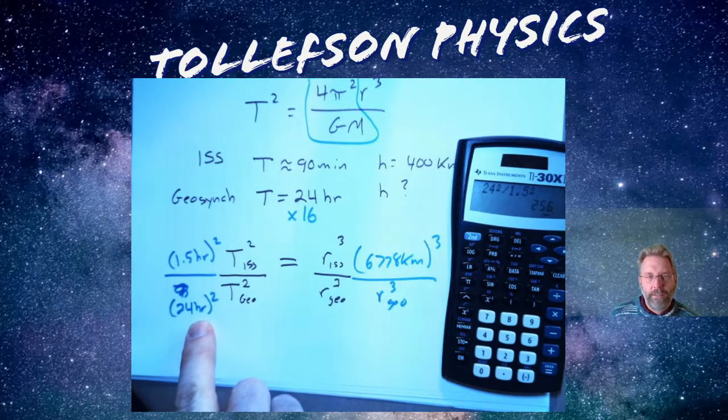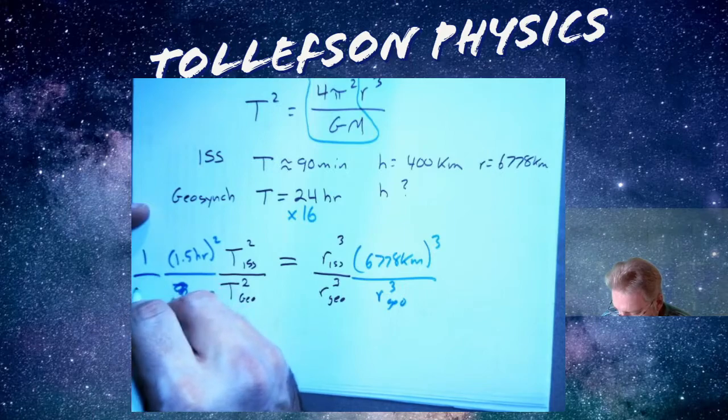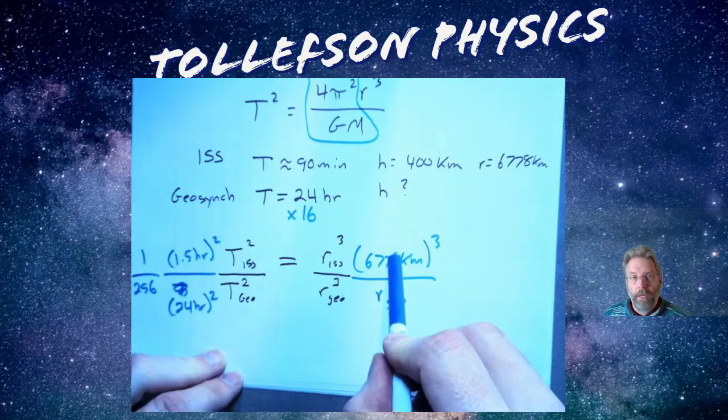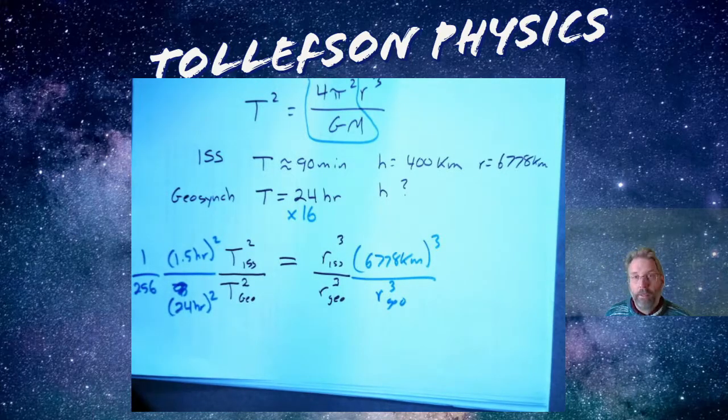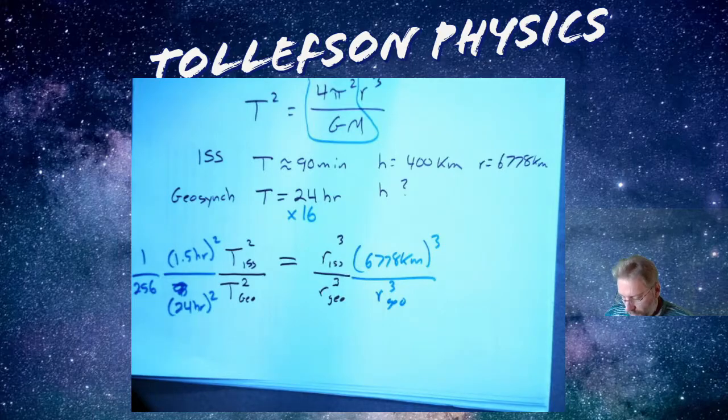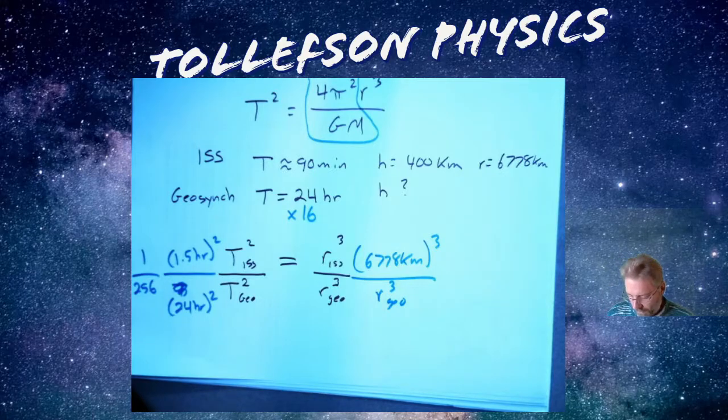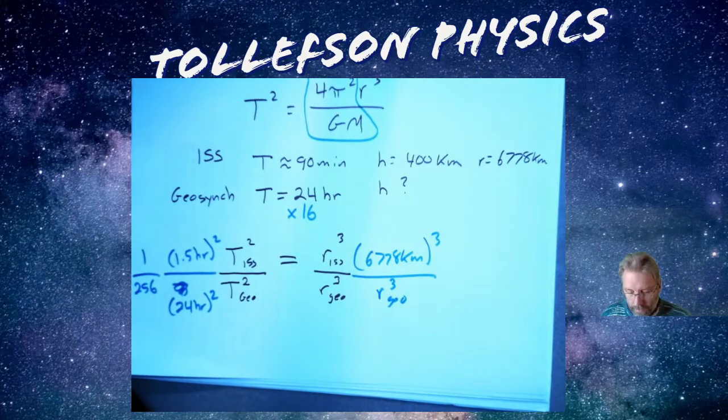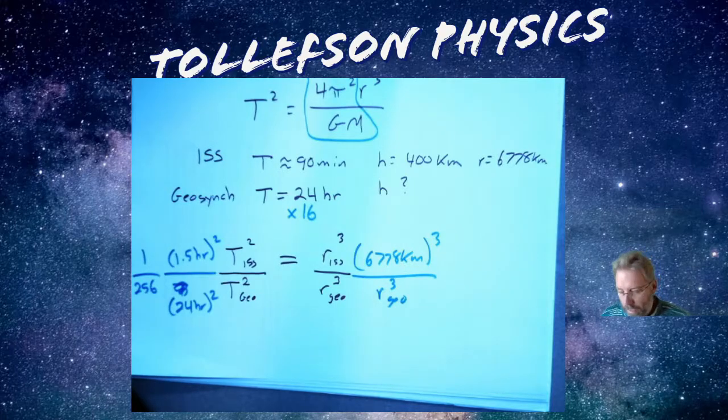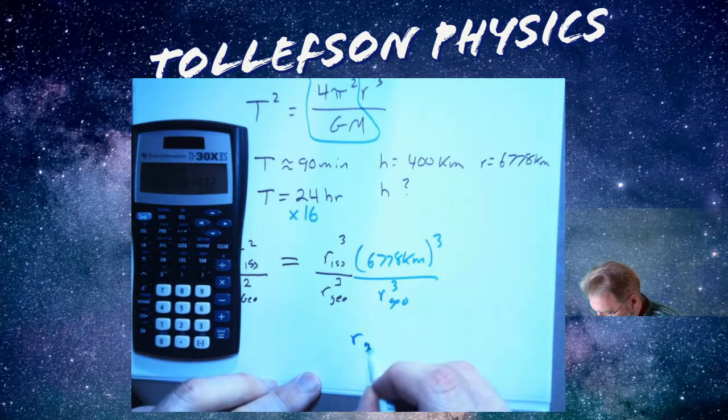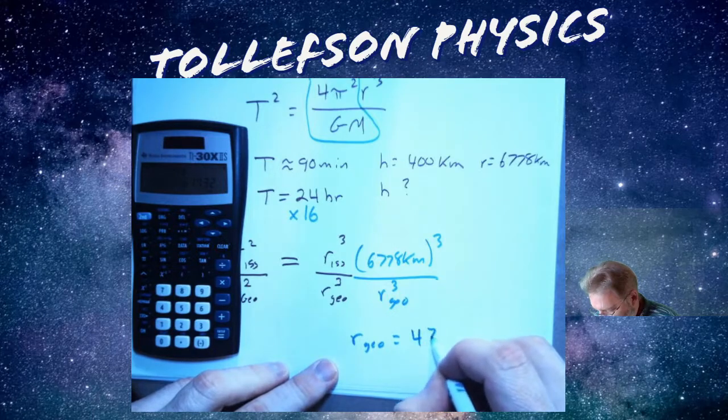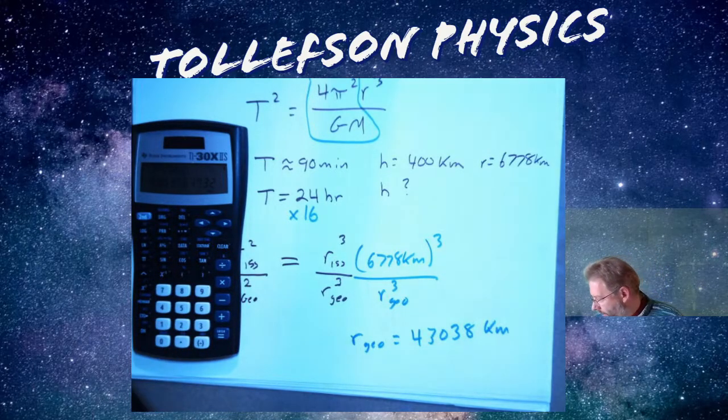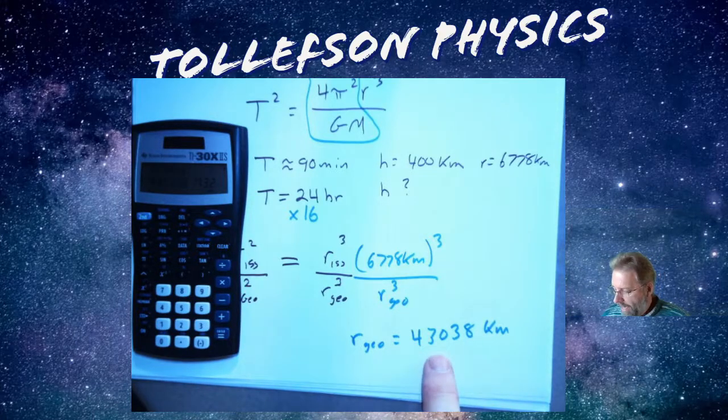So I'm going to take 6,778, and kilometers is fine in this case, cube it. And then I'm going to multiply it by 256 because that's what this fraction ends up being. And that will give me the value of this cubed. And now I'm going to hit cube root. And I get an r for the geosynchronous orbit that is 43,038 kilometers. So it's much further out compared to what it would be.